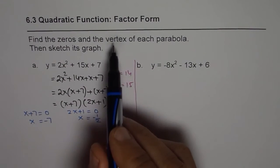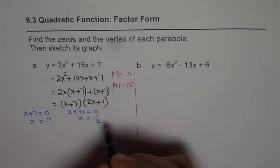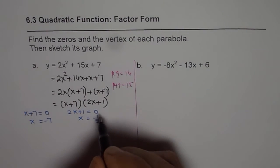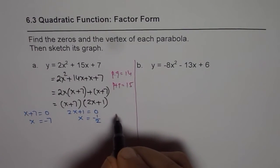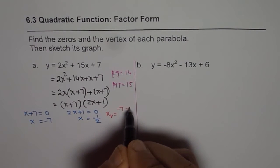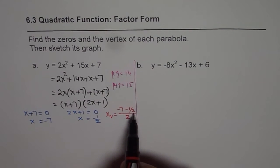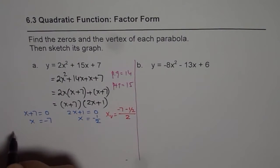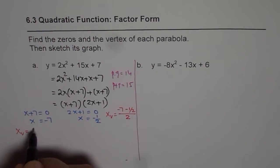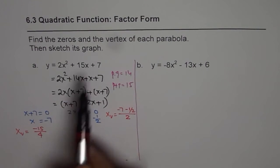To find the vertex, we take the average of the two zeros, since the vertex is always in the center. The x-value of the vertex is (-7 + (-1/2)) divided by 2. Computing: -7 minus one-half gives -15/2, and dividing by 2 gives -15/4. So the x-coordinate of the vertex is -15/4.